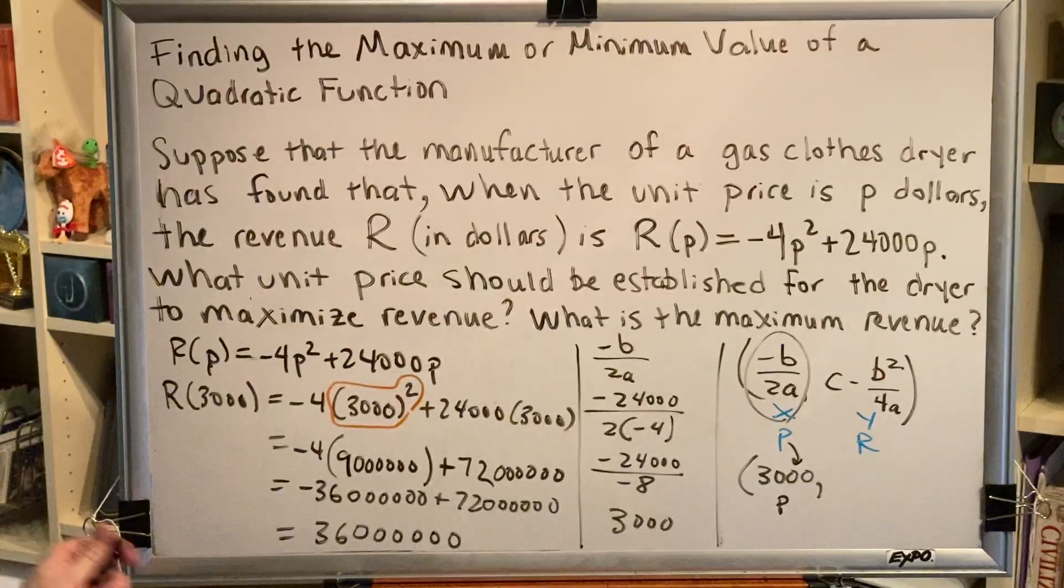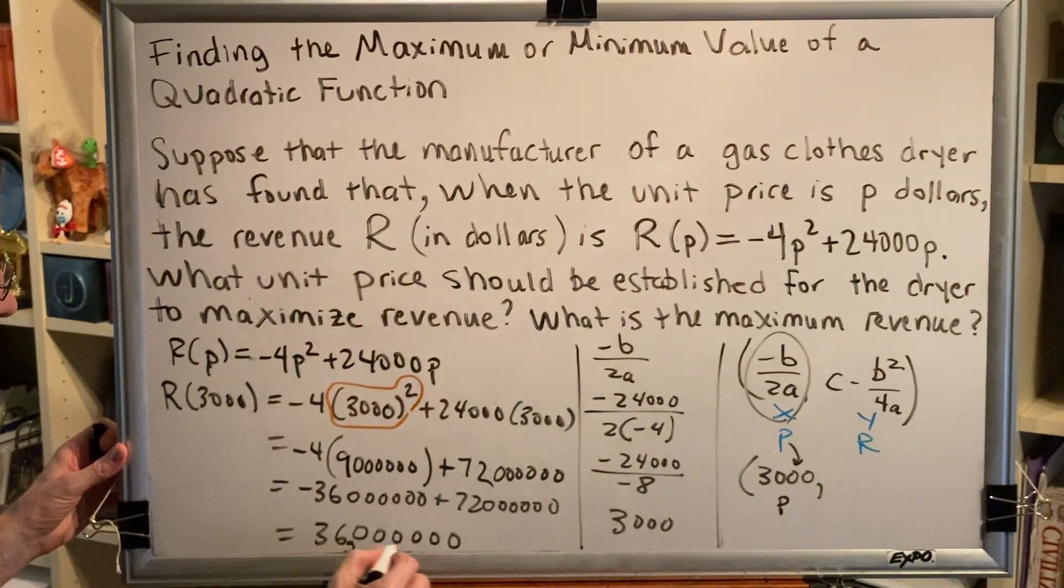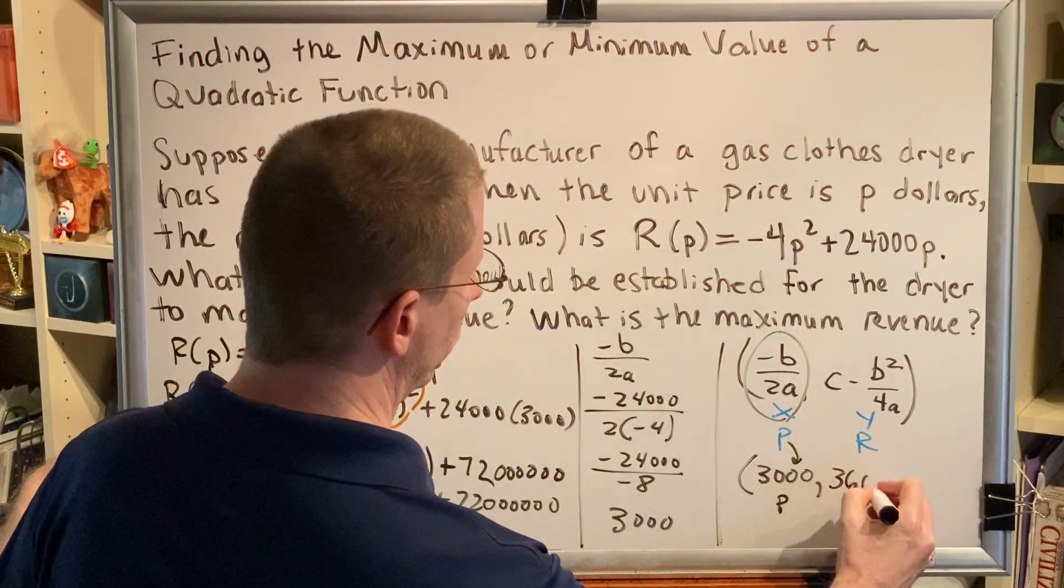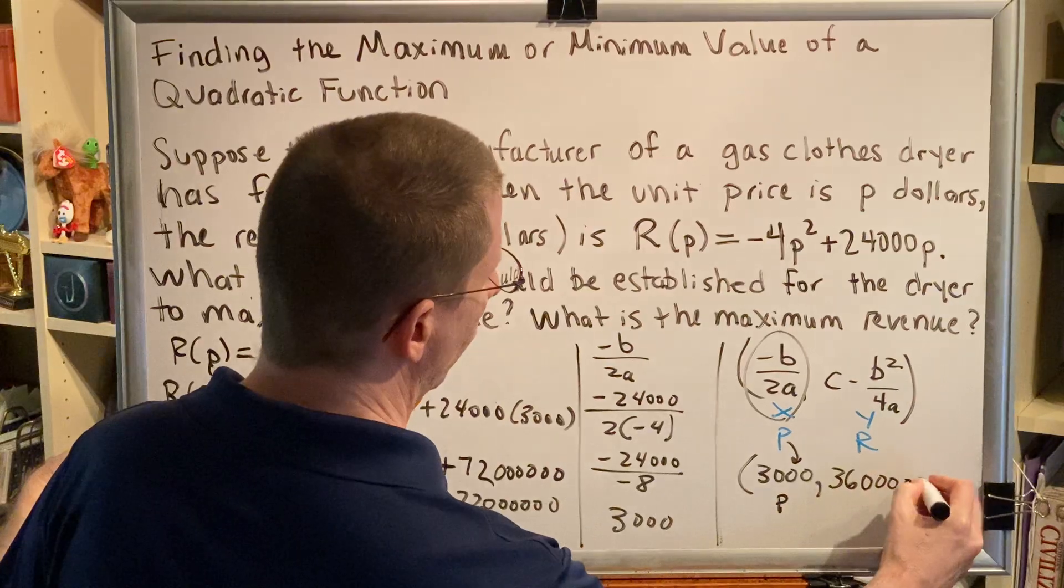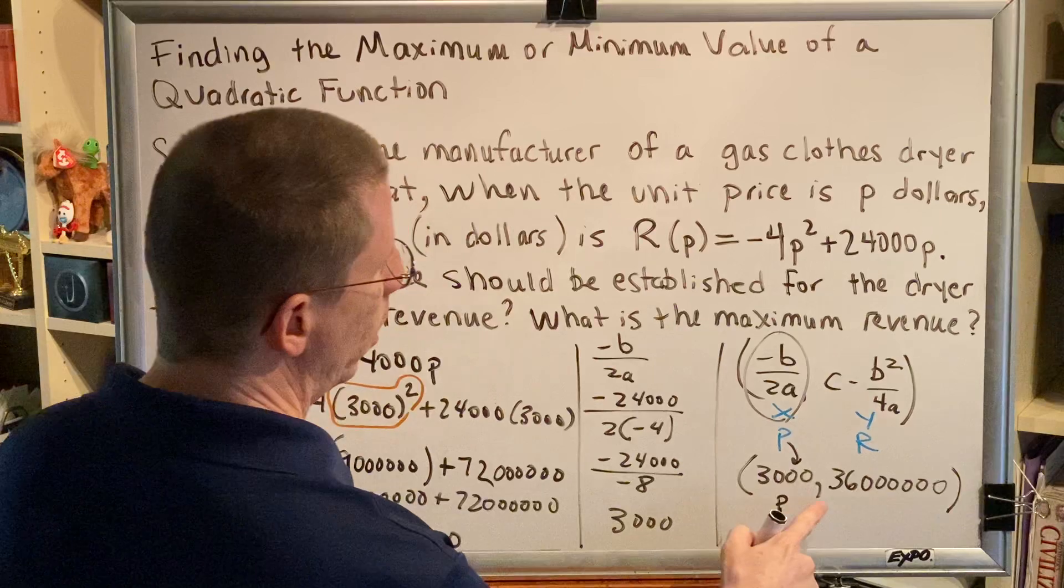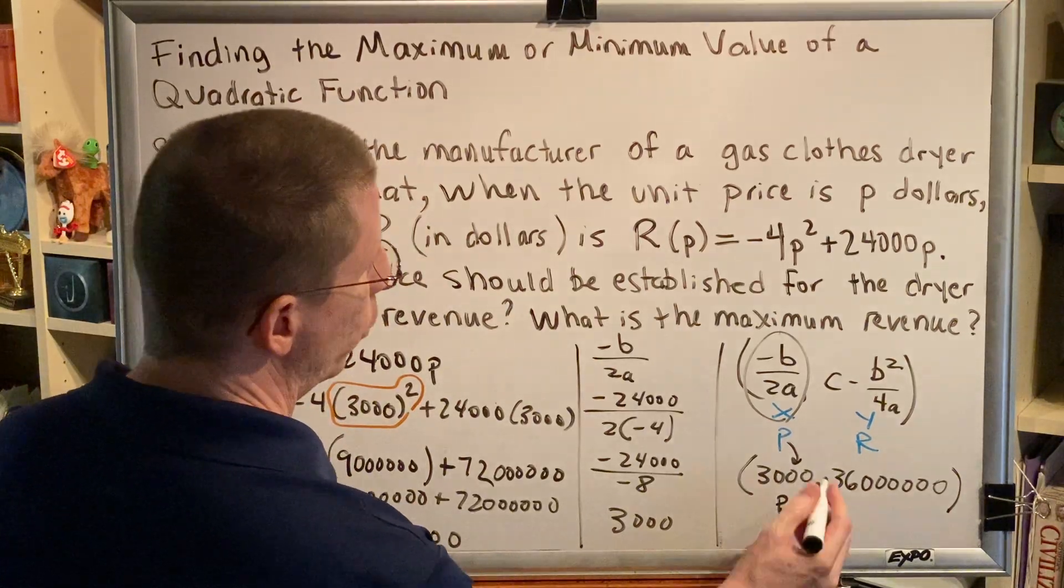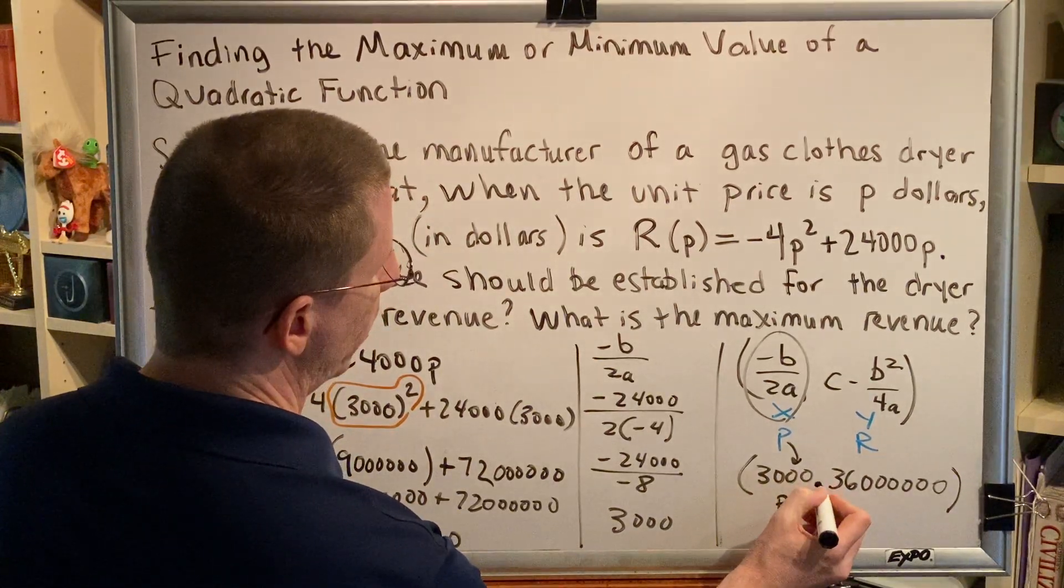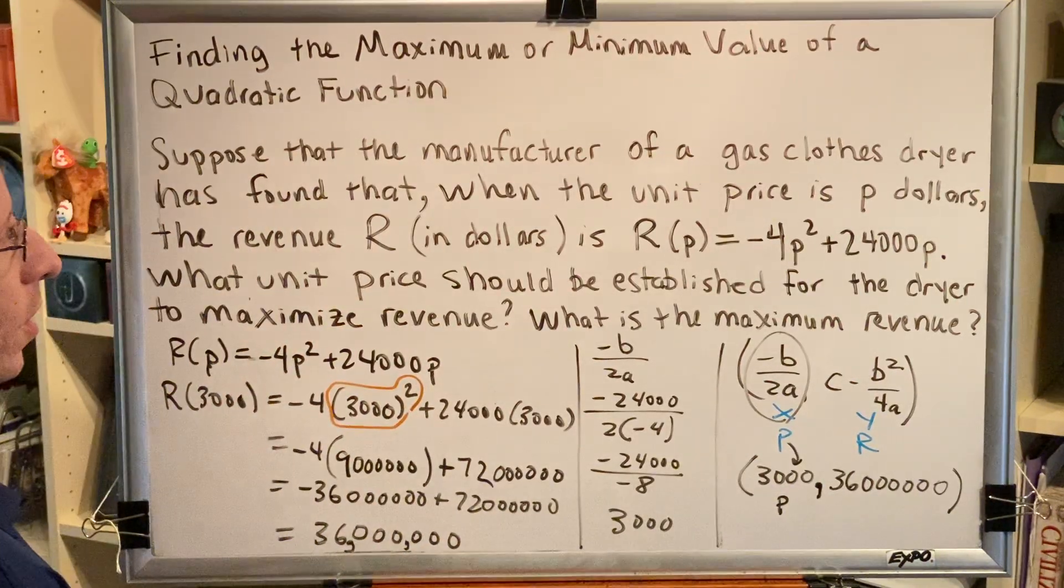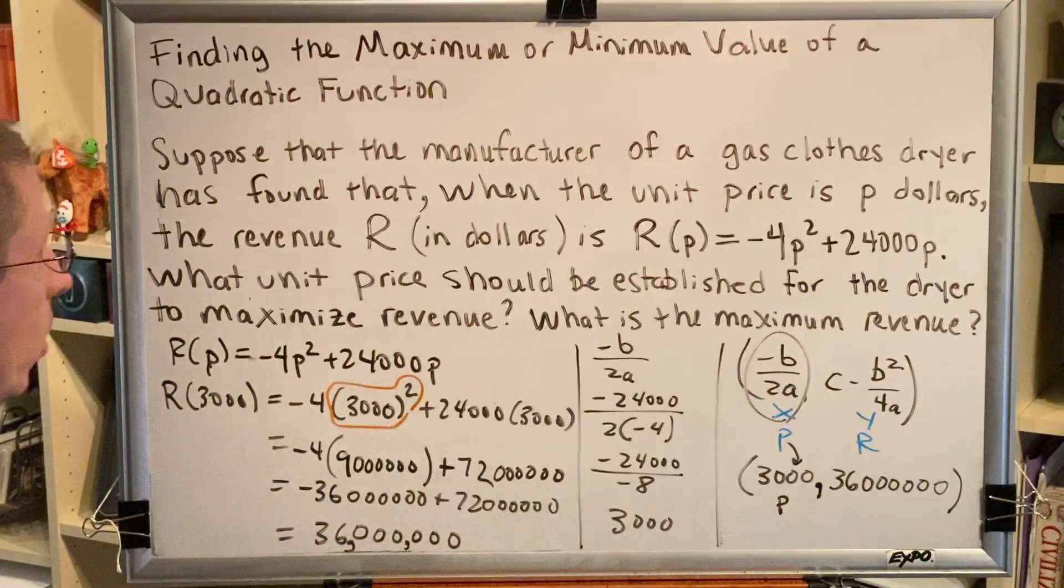72 minus 36 is 36, followed by 6 zeros. So this gives us our revenue, $36 million. I'm choosing not to put the commas in my y coordinate here so that I can avoid the confusion of having one comma representing the separation of the coordinates and the other representing the separation of the place values of the number.